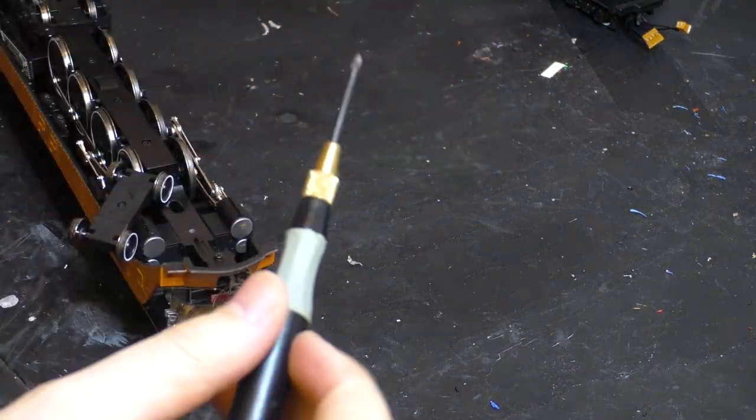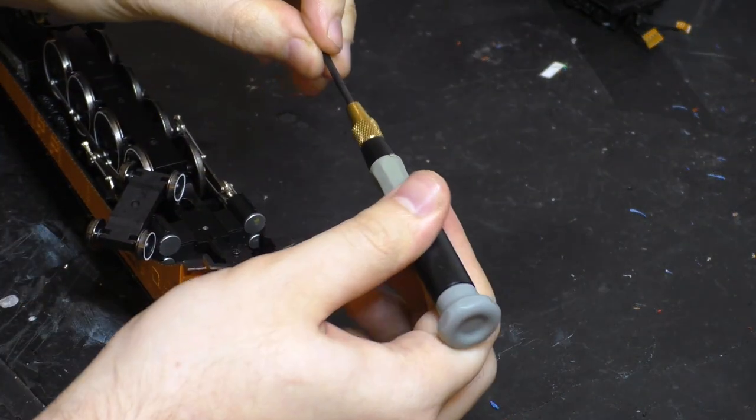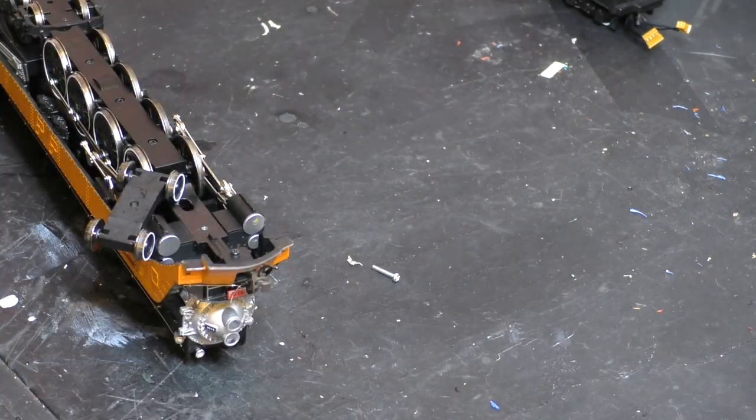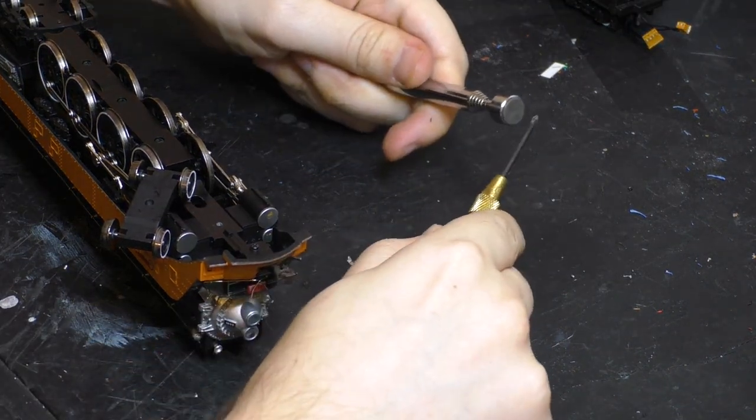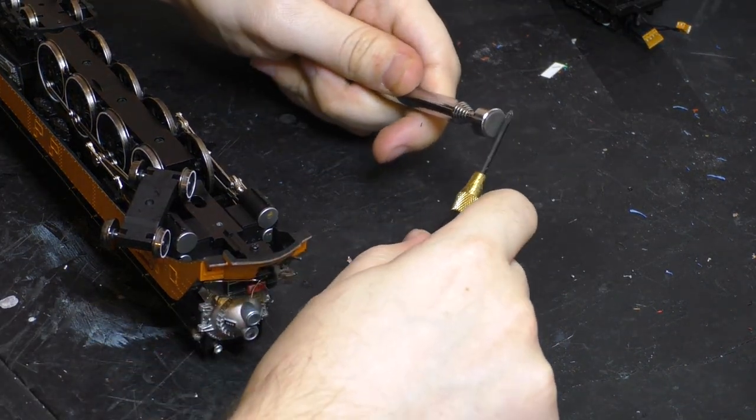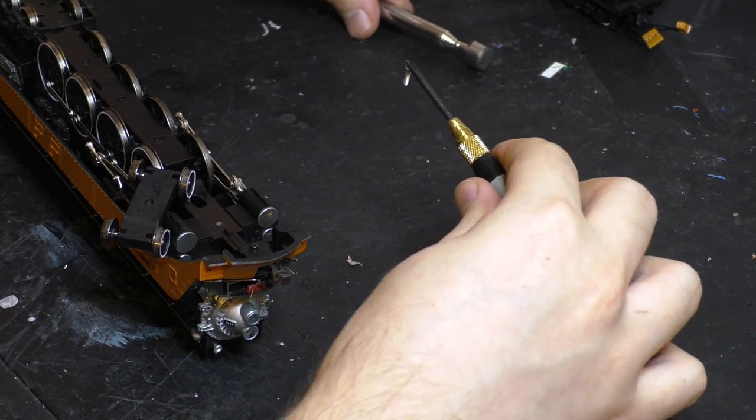So, in order to get that screw back in there, we are going to need a magnetic screwdriver. And this one... Is... Not magnetic. However, we can make it magnetic. Watch this. Magnet. Screwdriver. Magnetic screwdriver.